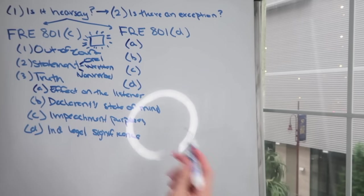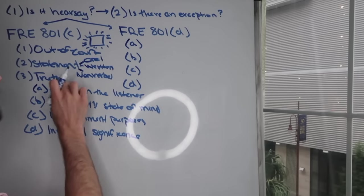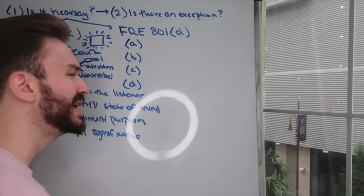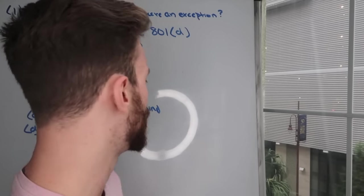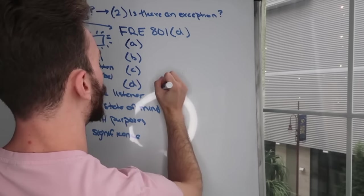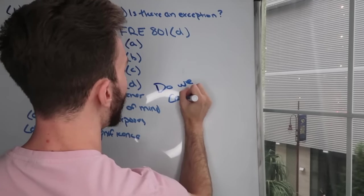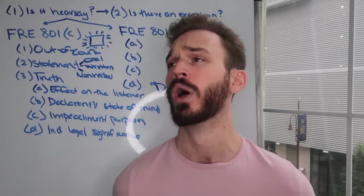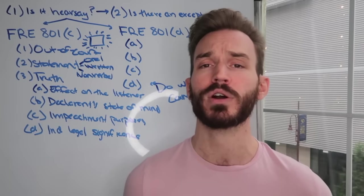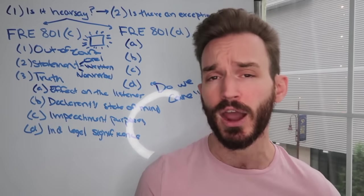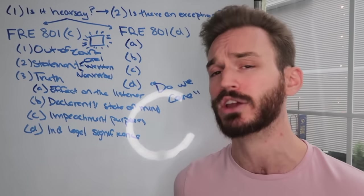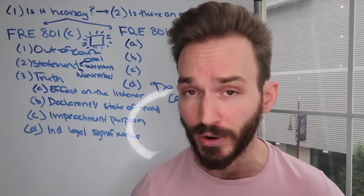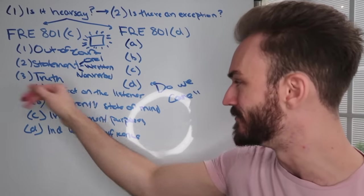A good test to help make this determination for the third element is what I call the 'do we care' test: do we care whether this statement is true or false? In the bird example, do we care whether there was actually a bird flying around? No — we're not introducing it to say there was a bird. We're introducing it to show the effect on me, the listener. That's effect on the listener.